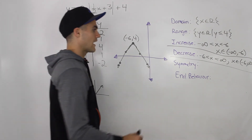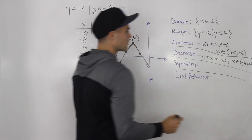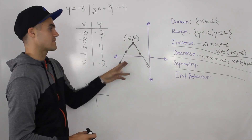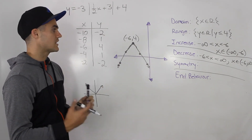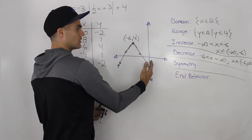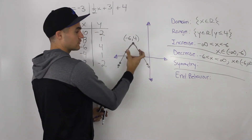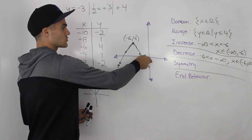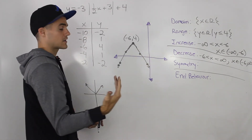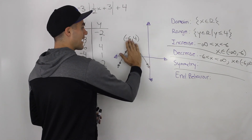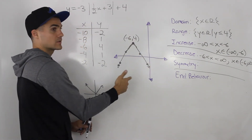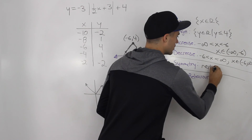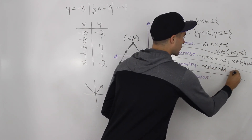For symmetry, they're asking whether the function is odd, even, or neither. An even function is symmetrical about the y-axis — this is clearly not. An odd function is rotationally symmetrical about the origin, which also doesn't apply here. So the symmetry is neither odd nor even.